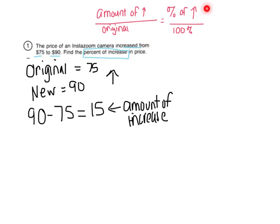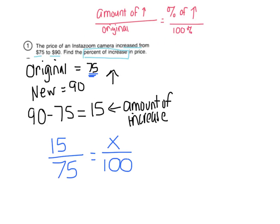If you look up here, this is the proportion that you should have in your notes from the videos and from class. We just found the amount that it went up by — that's the amount of increase, $15 — and it started at $75. So we want to see what percent is 15 out of 75. I'm going to do the amount of the increase over the original, then X over 100. We cross-multiply: 15 times 100 is 1,500, divided by 75, and X equals 20.